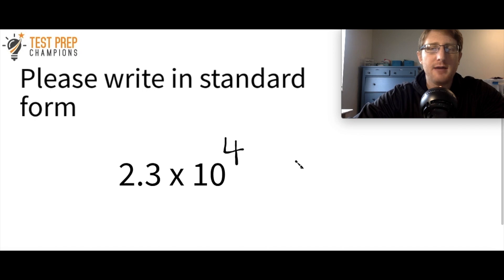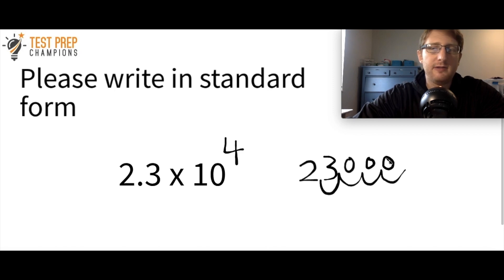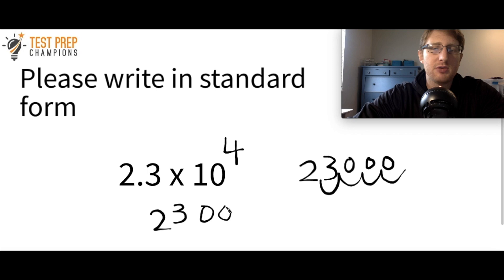Here's another example: 2.3 times 10 to the fourth power. The first way to think about it is to start by writing 2 and 3, knowing the decimal started between them at 2.3, then move the decimal four places to the right — one, two, three, four — and fill in the zeros. The other way is to write 23, and since the exponent is four, subtract one to get three zeros.